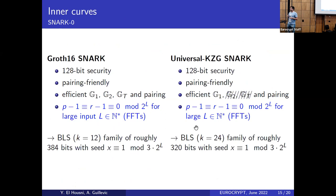With two target SNARK types in mind — Groth16 and universal KZG SNARKs — universal SNARKs are instantiated in the PIOP model with a KZG polynomial commitment scheme, which also relies on pairings, presenting the same arithmetic mismatch as Groth16. For 128-bit security, we require both curves to be pairing-friendly. For Groth16, we need efficient arithmetic over G1, G2, GT, and the pairing. For universal KZG SNARKs (e.g., PLONK, Marlin, Sonic), we do not need G2 or GT arithmetic — only efficient G1 arithmetic and efficient pairings.